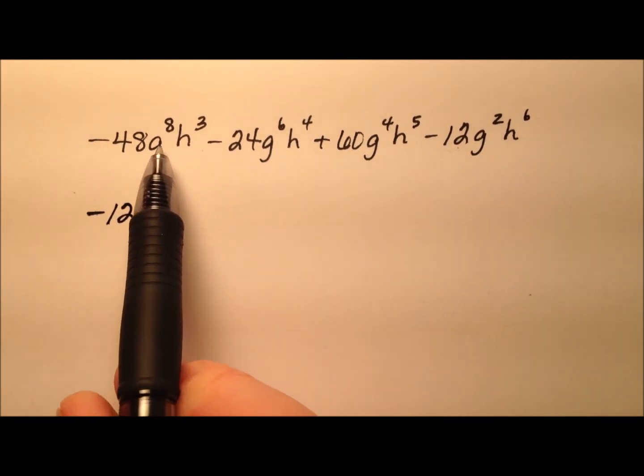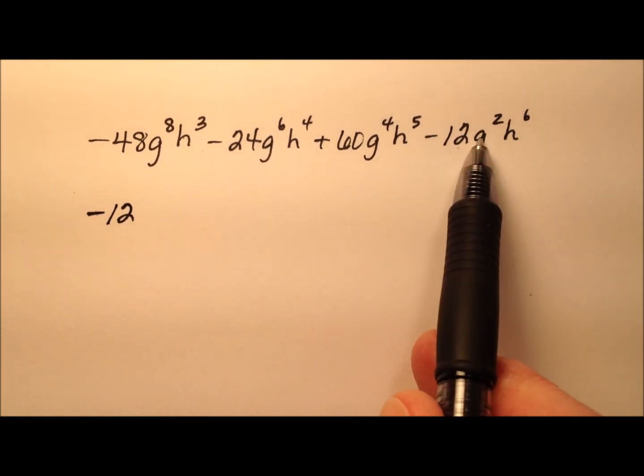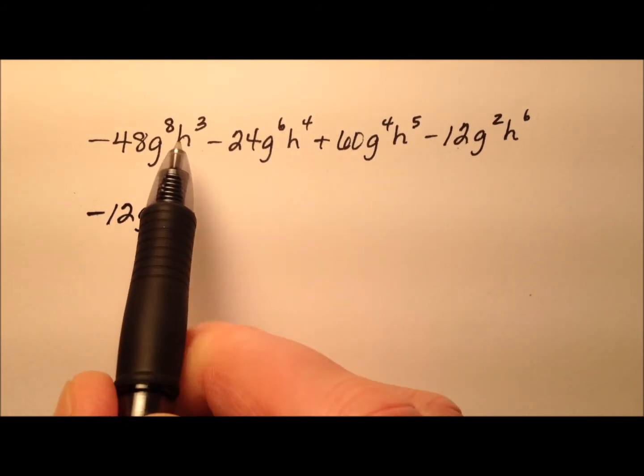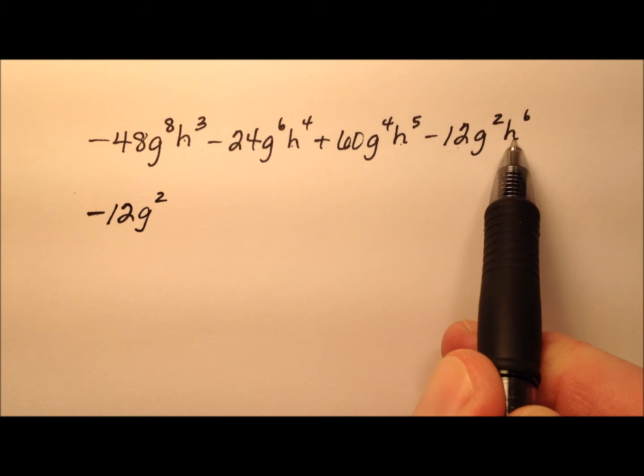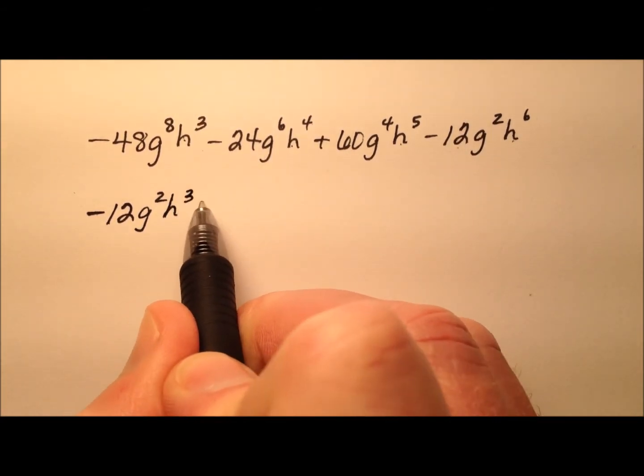Let's next look at my variables, g and h. We want the smallest as long as g appears in all of them, which it does. So 8, 6, 4, 2, so g squared. And h does exist in all of them, so 3, 4, 5, 6. So h cubed will be the smallest.